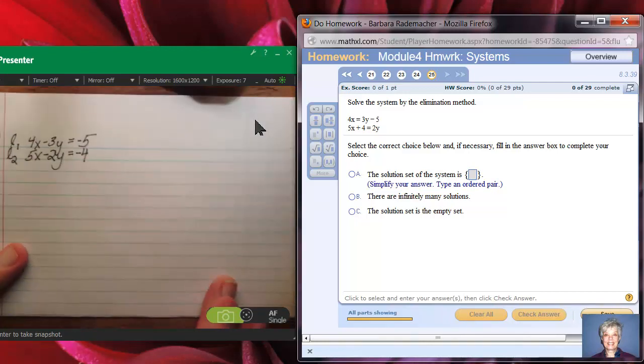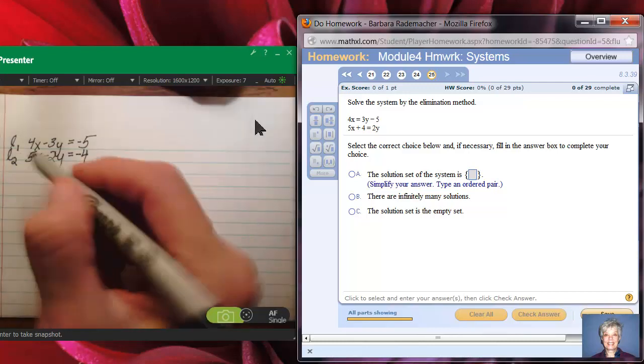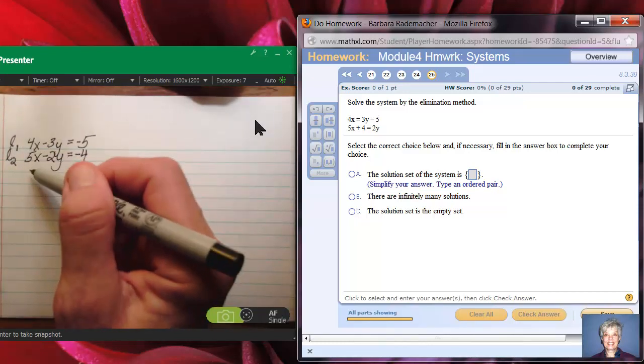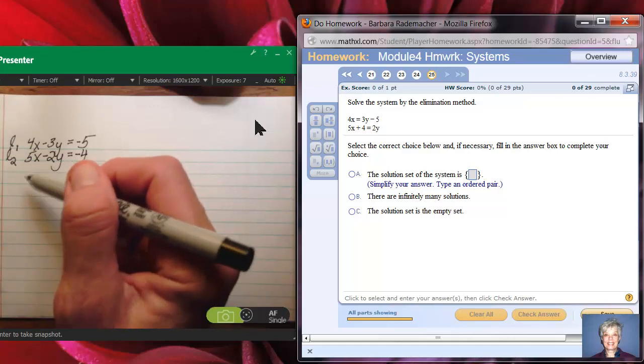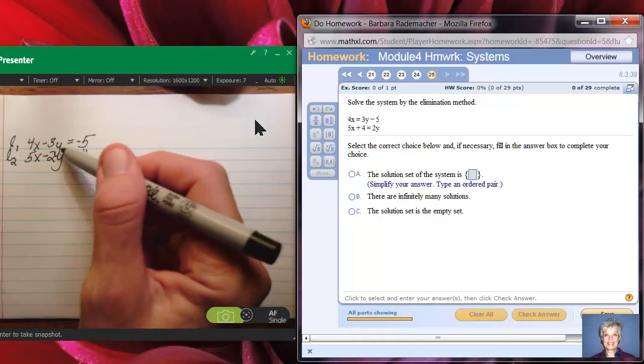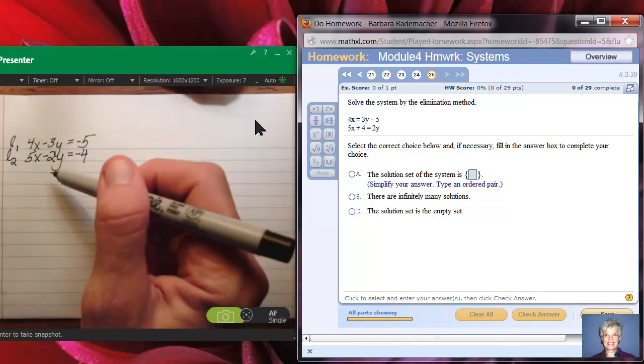Now this is my system. Both of these lines are in standard form, and the whole idea of elimination is that I can add the two lines together, and one of my variables will zero out. So let's see. If I add these two lines together, I'll add my x's together, 4x plus 5x equals 9x. That's not zero. And if I add my negative 3y to my negative 2y, that's negative 5y. That is not zero.